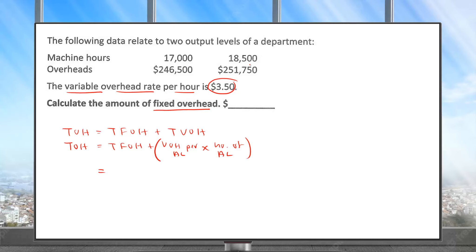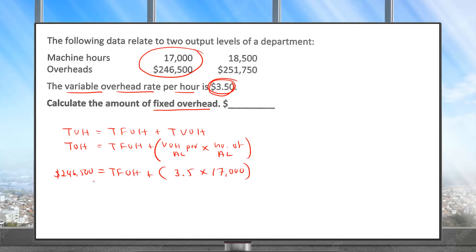In this question the activity level is number of hours. Out of the two activity levels given, you can select either one. I'll select the first one: when machine hours are 17,000 hours, the total overhead is $246,500. The variable overhead rate is $3.5 per hour.